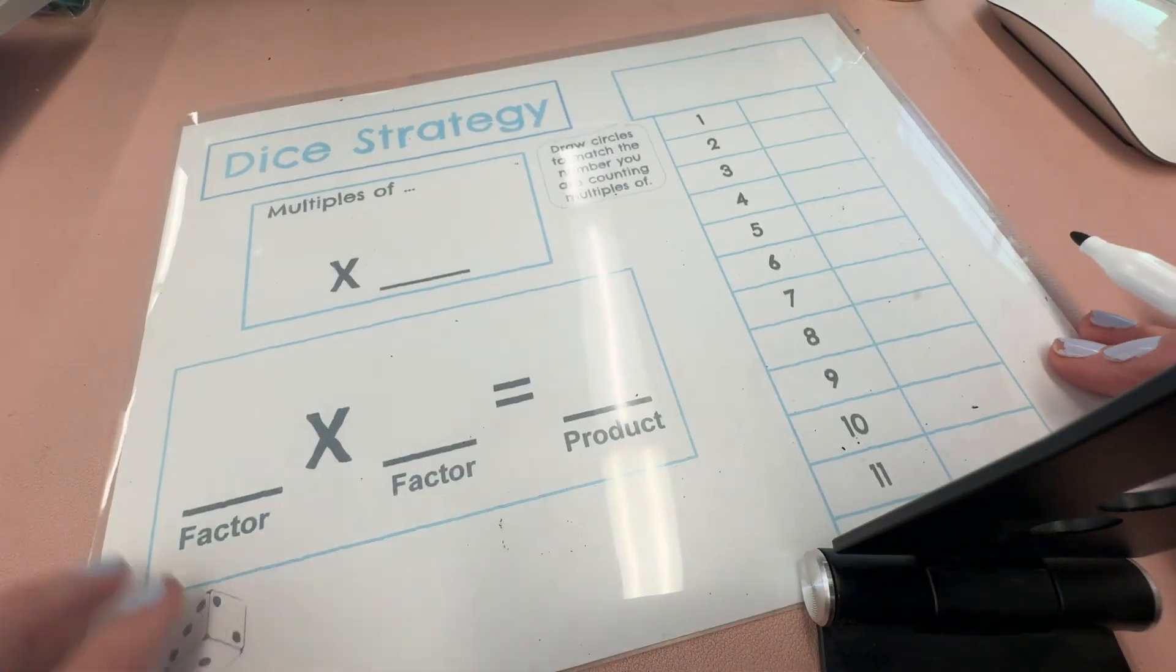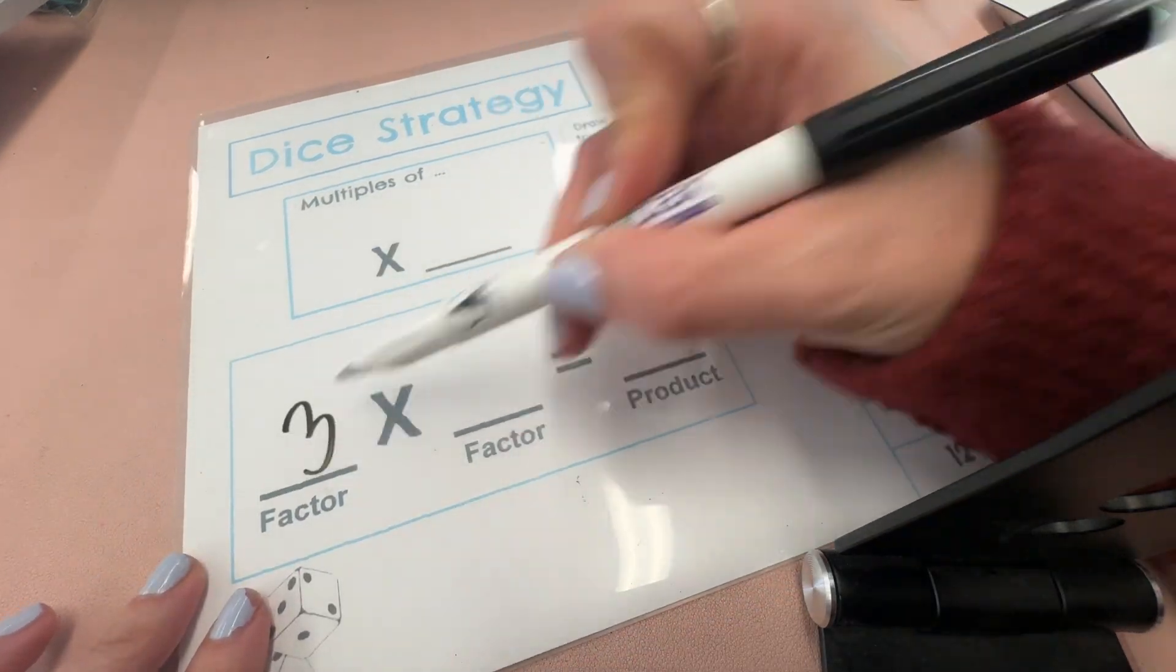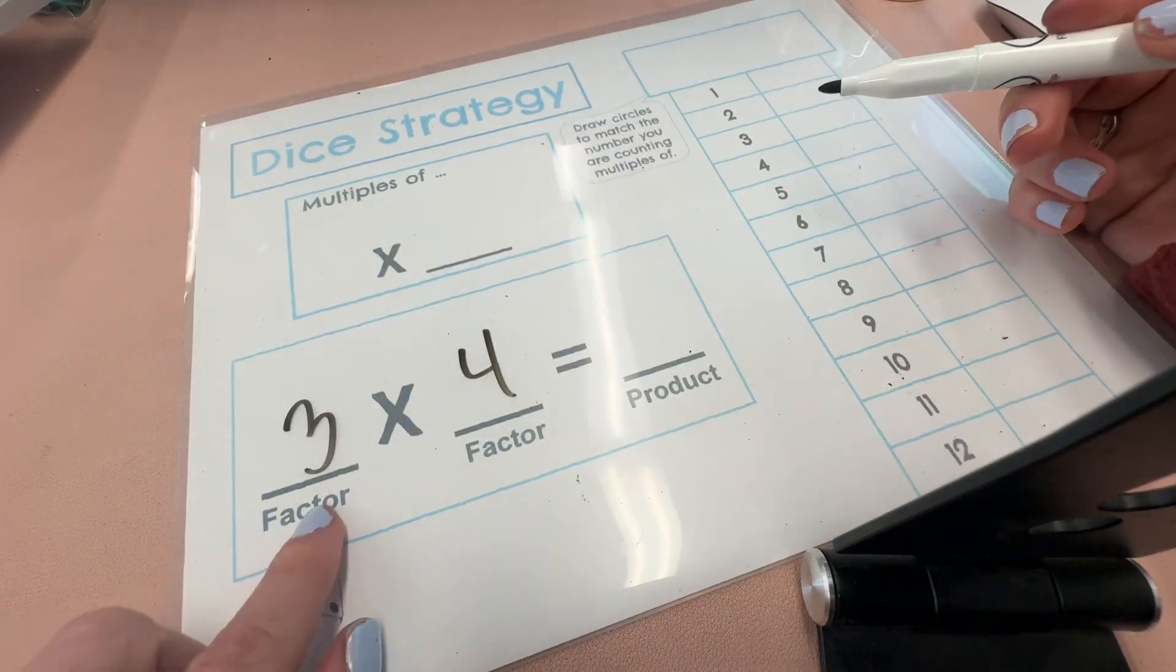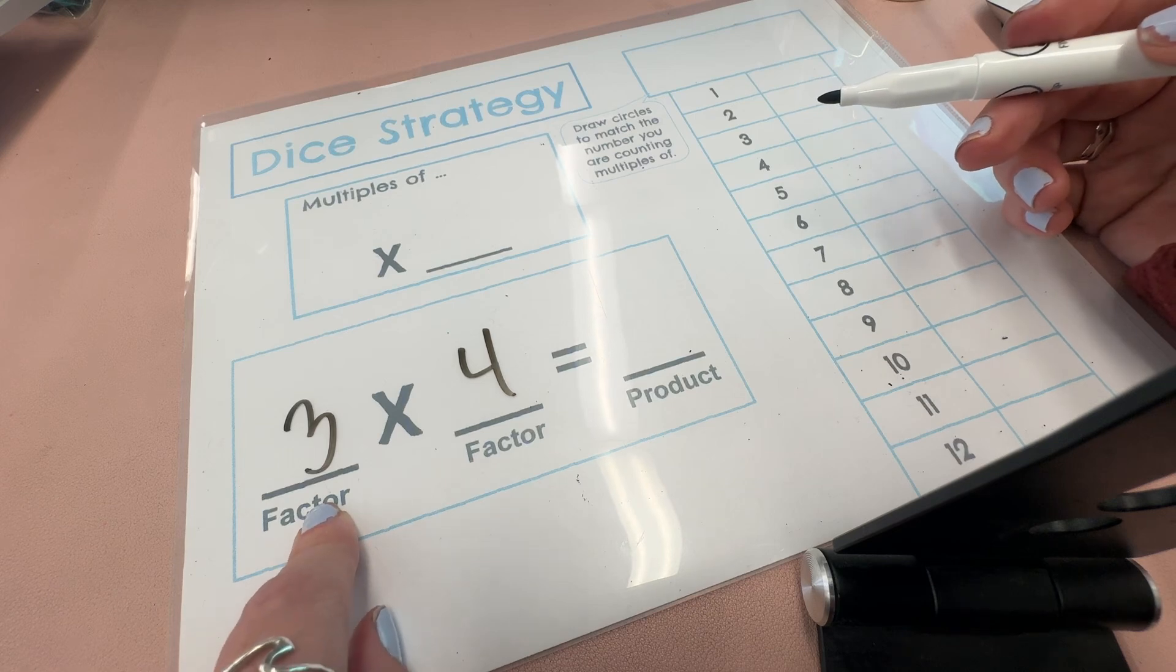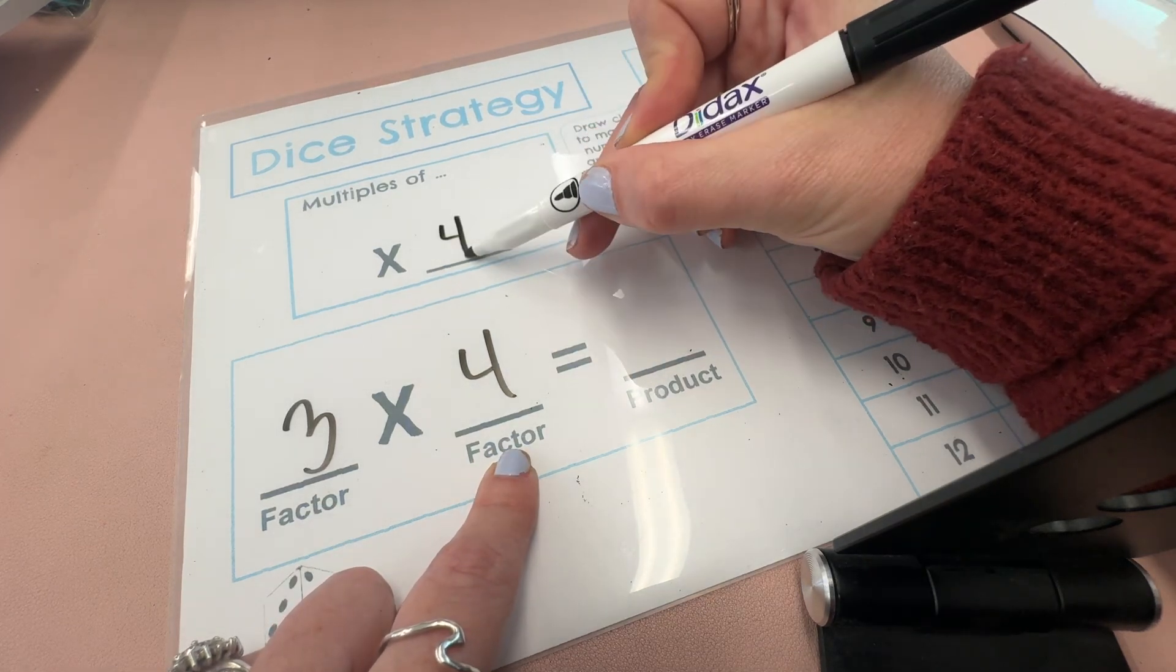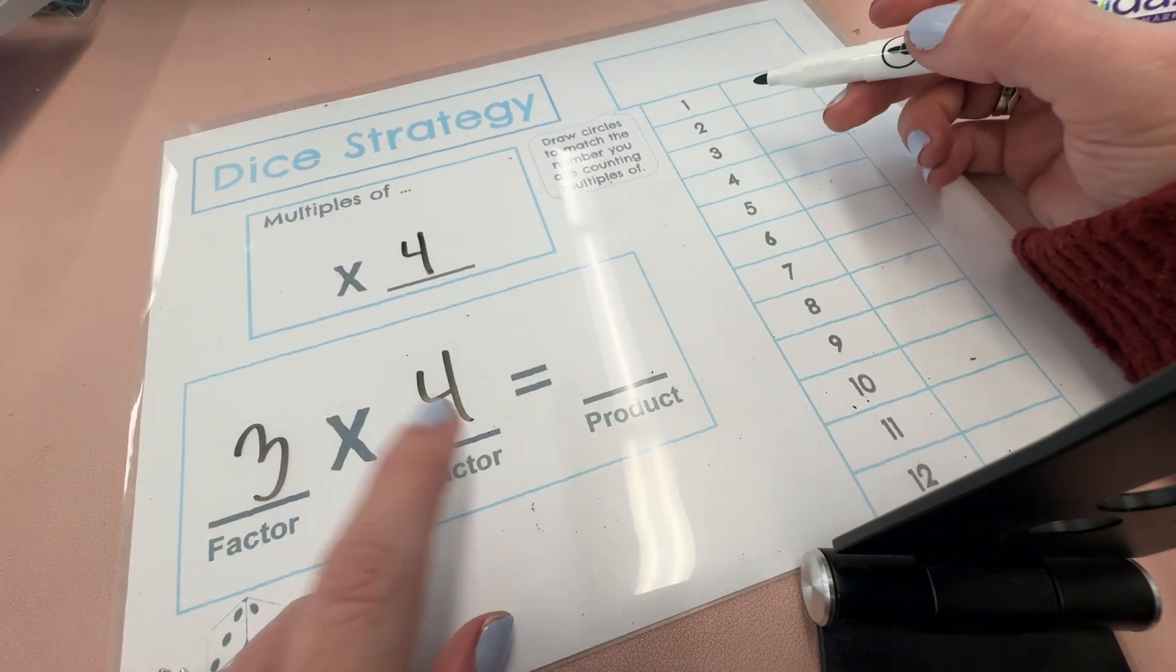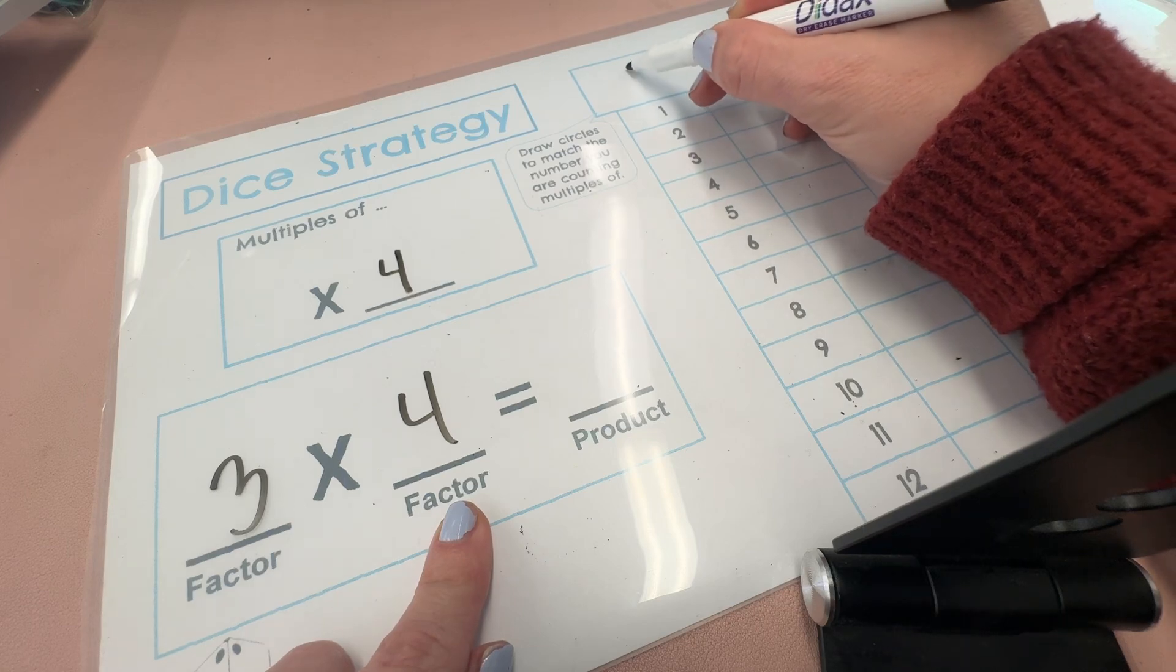Another strategy we use is the dice strategy. Whatever you're going to multiply. So let's say we're going to do three times four. We would pick how many multiples we're going to count of four. So we're going to do multiples of four. You could also do three. Either way, it's going to work.